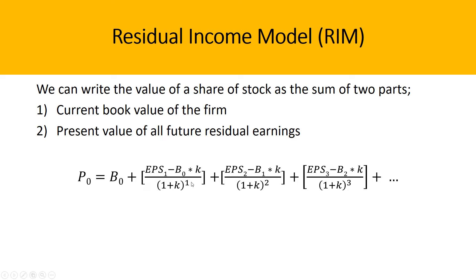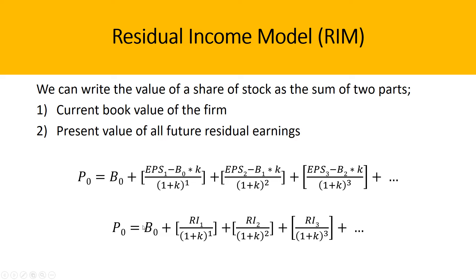We can simplify the formula so that price equals the current book value per share, plus the residual income in period 1 discounted to present value, plus the present value of residual income in period 2, plus the present value of residual income in period 3, and so on. By summing up the present value of all future residual earnings and adding that to the current book value of the firm, we can calculate the per-share value of the stock.